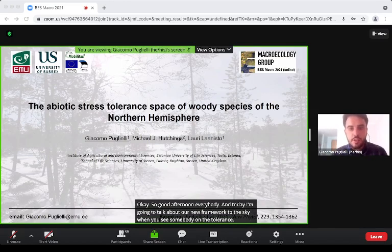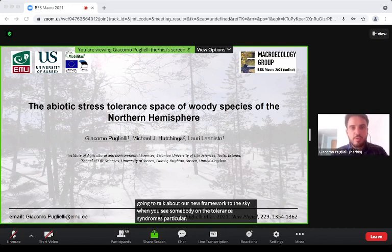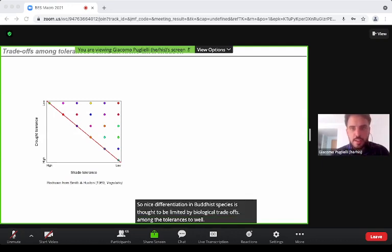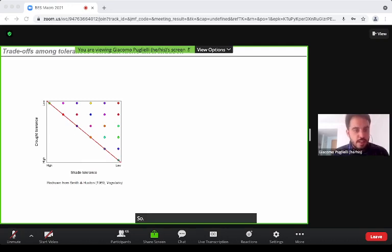Niche differentiation in woody species is thought to be limited by biological trade-offs among tolerances toward abiotic stress. This stems from the classical model proposed by Smith and Huston in 1989.